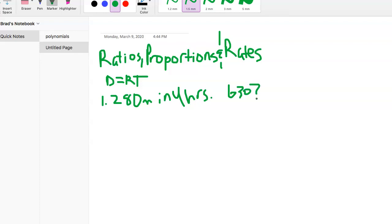This is a distance equals rate times time question. They're asking about the 630 miles, how long is it going to take. So there's our 630 equals, and now they're asking how long, so we don't know the answer to that question. T is unknown right now.